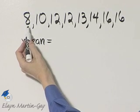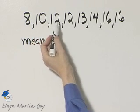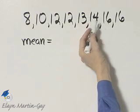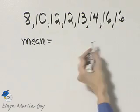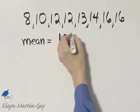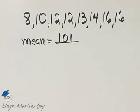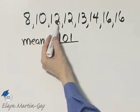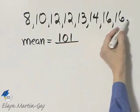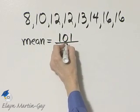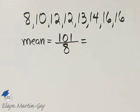Now if you find this sum, 8 plus 10 plus 12 plus 12 plus 13 plus 14 plus 16 plus 16, that sum is 101. Then divide by the number of numbers: 1, 2, 3, 4, 5, 6, 7, 8. Divide by 8, and that's what we'll do to find our mean.